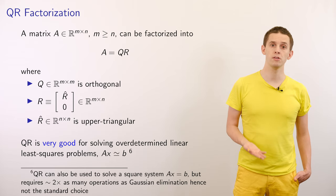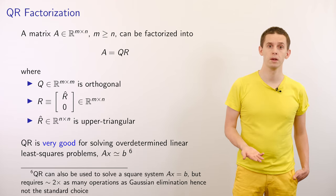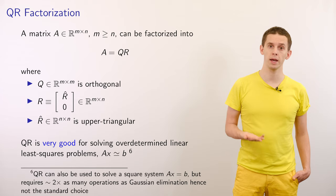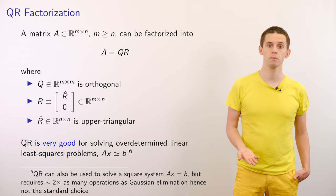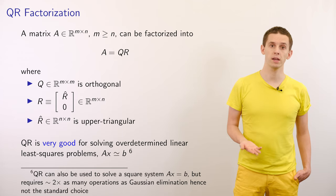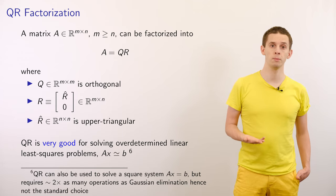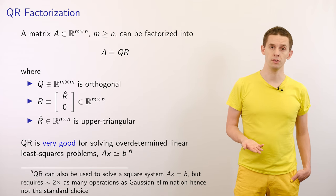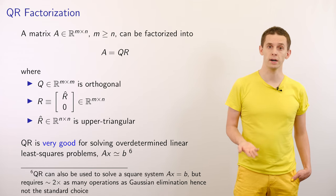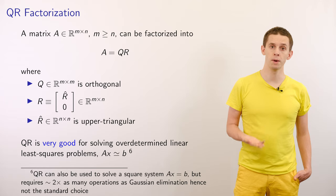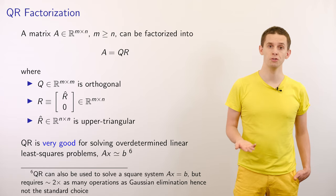Then we can write A is equal to Q times R, where Q is an M by M orthogonal matrix and R is an M by N rectangular matrix. The first N by N square block of R is an upper triangular matrix that we call R hat, and the remaining rows of R are all 0.